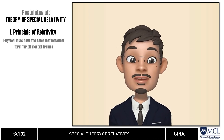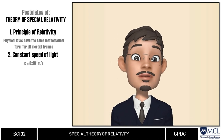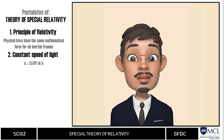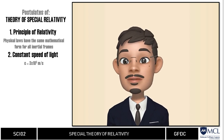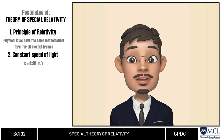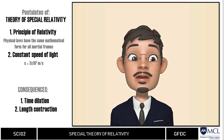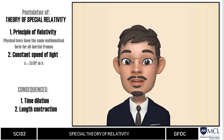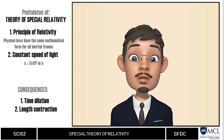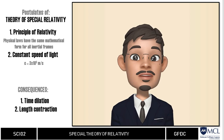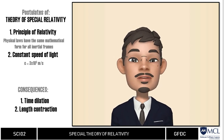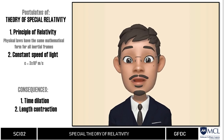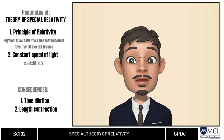And second, the speed of light remains constant and independent of the motion of its source and of the observer. The consequences of the special theory of relativity include time dilation and length contraction. These two consequences are significant only when one of the two objects is traveling at relativistic speed. In the next video, we will have more examples of length contraction and time dilation.